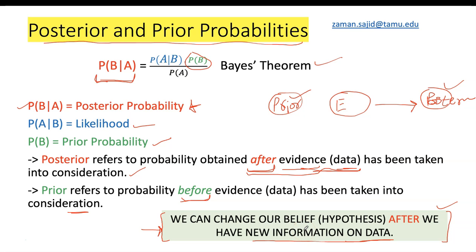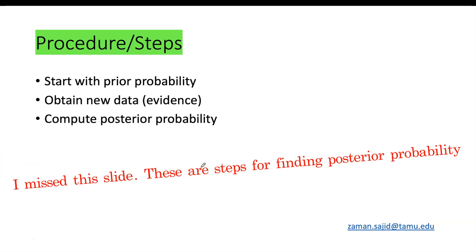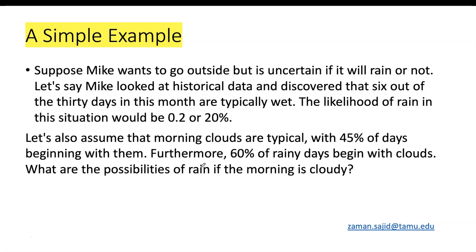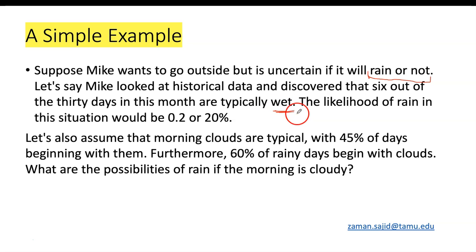Let me explain with an example. This is a very simple example — I did not choose an engineering example; my idea is just to explain what prior and posterior mean. Suppose Mike wants to go outside but is uncertain if it will rain or not. Mike looked at historical data and discovered that 6 out of 30 days in this month are typically wet. So the probability of wet is 6 out of 30, which is 0.2. Therefore the likelihood of rain in this situation would be 0.2 or 20 percent.